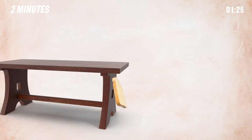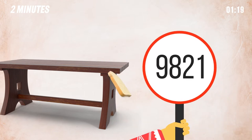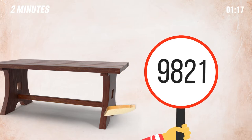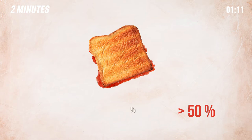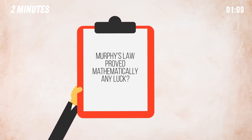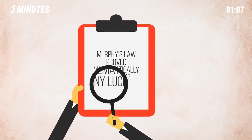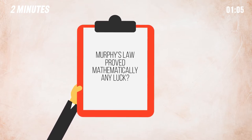British scientist Robert Matthew performed an experiment with toast to test this. He dropped toast from a table as many as 9,821 times and calculated that the jam coated side would touch the floor 62% of the time. Way over 50%. This shows Murphy's Law has been proven mathematically and that maybe it's not just a matter of luck.